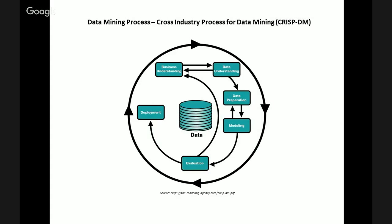Data science teams pass a working prototype to the development teams so that it can be recoded for the production environment. Oftentimes in the deployment stage after this, teams will go back to the business understanding stage to really internalize all of the insight that was drawn from the six-stage process.